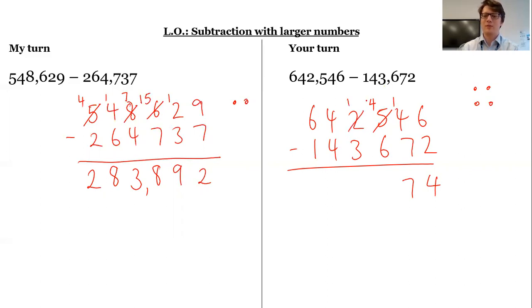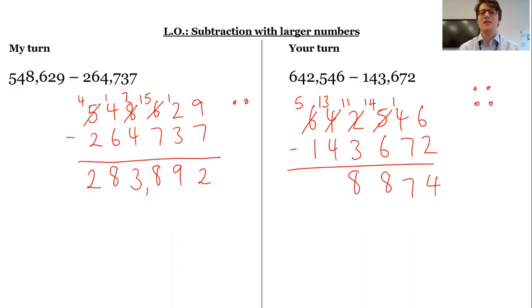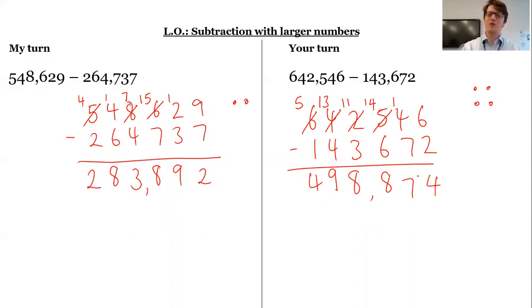4 subtract 6 I can't do, so again I'm going to regroup. 14 subtract 6 is 8. 1 subtract 3 I can't do, so I need to regroup to get 10 more thousands. 11 subtract 3 is 8. 3 subtract 4 I can't do, so I'm going to regroup. Now I've got 500 thousands — I'm going to regroup it so it becomes 10 ten-thousands, so now I've got 13 ten-thousands. 13 subtract 4 is 9 and 5 subtract 1 is 4. That gives us 498,874.